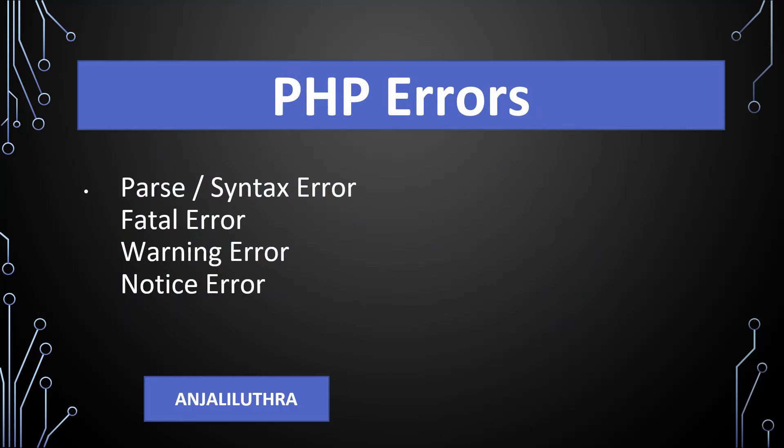Logical error is not listed separately here. Logical error means that the code is written, there is no syntax error, the program executes, the result is also coming, but the result is not correct. The output we are getting is not correct, which means the logic in the code is wrong. You will have to find where it is wrong — maybe you had to multiply, or you had to check a condition differently, or the loop logic is wrong. That is completely up to you to correct. That's a logical error.